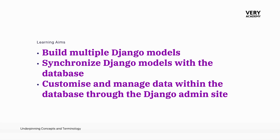By the end of this module, you would have built a database which consists of around about eight tables, includes multiple types of fields and relationships between tables. You will also have a solid platform to administrate your tables through the Django admin site. Now let's go.